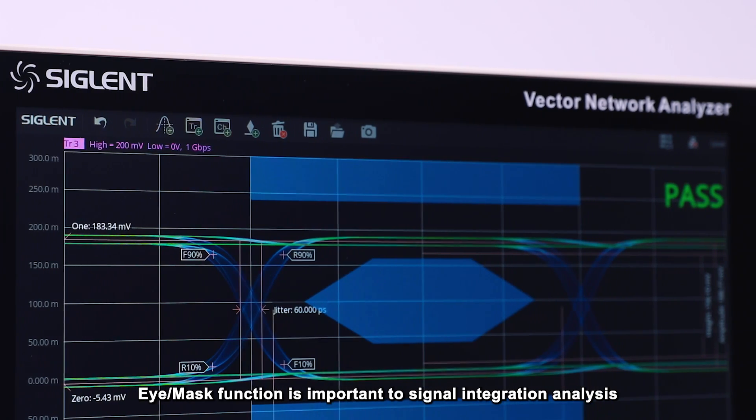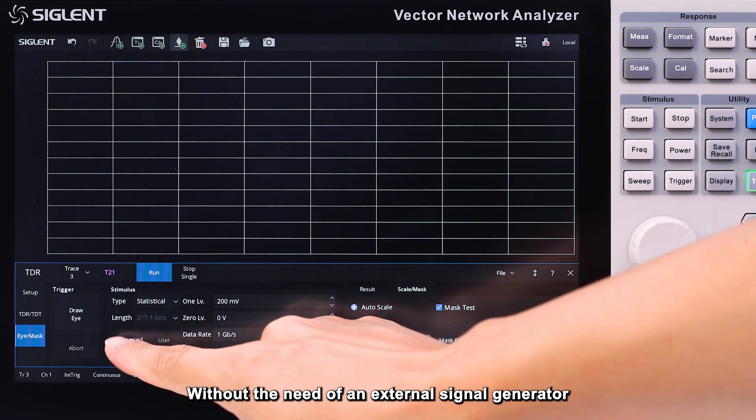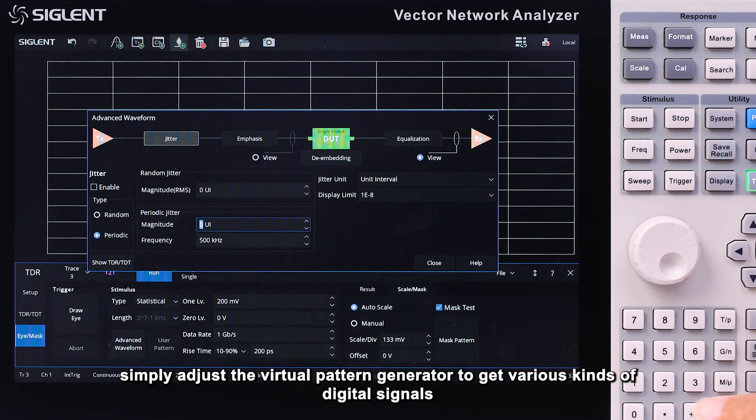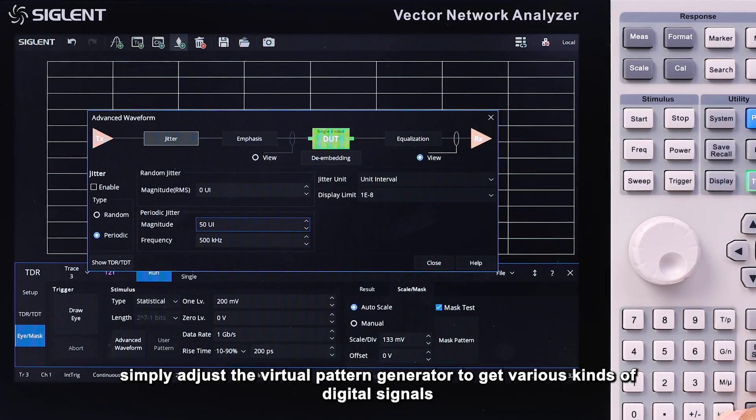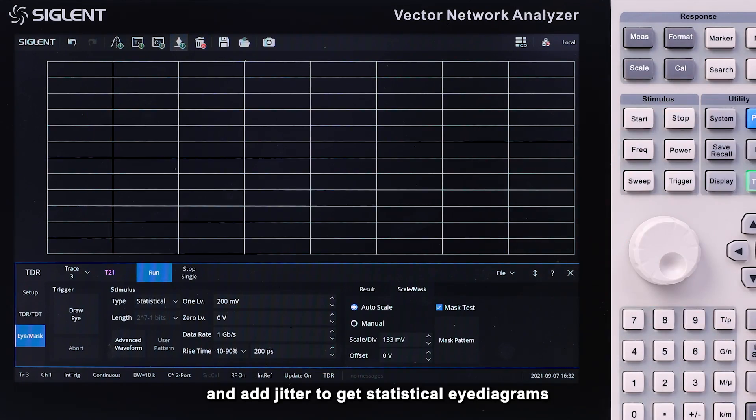Eye and mask functions are important for signal integrity analysis, and without the need of an external signal generator, you can simply adjust the virtual pattern generator to get various kinds of digital signals, and add jitter to get statistical eye diagrams.